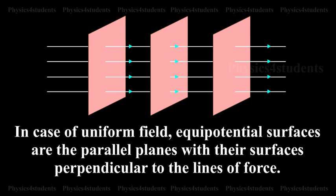In case of uniform field, the equipotential surfaces are the parallel planes with their surfaces perpendicular to the lines of force as shown in the animation.